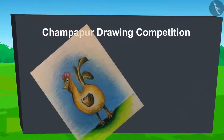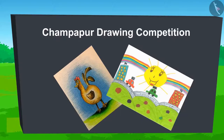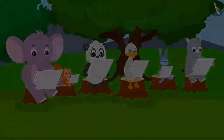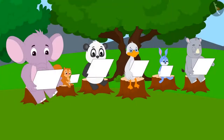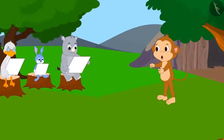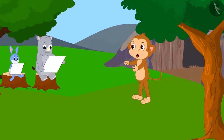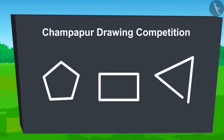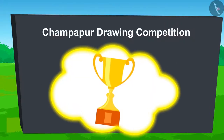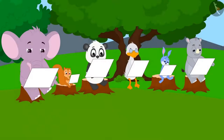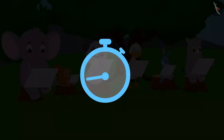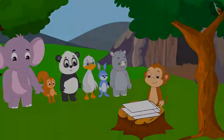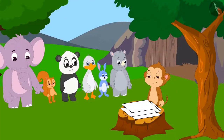Today, a drawing competition has been organized in Champapur. Everyone is ready with paper and pencil. Babban, the director of the competition, said that they can draw any shape. The person who creates the most beautiful picture will win a prize. Everyone started drawing their own pictures. Time ran out and everyone gave their pictures to Babban.